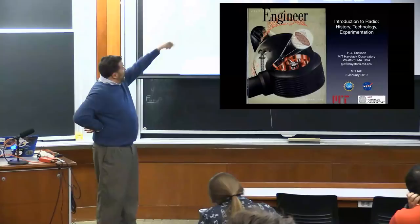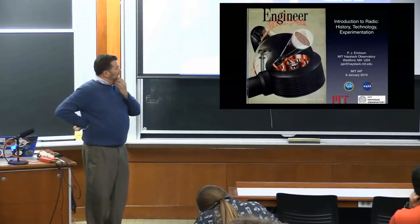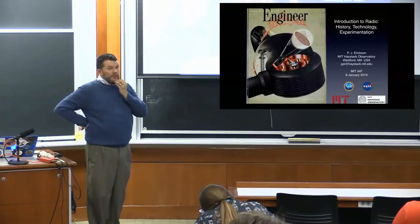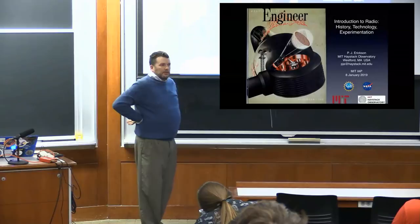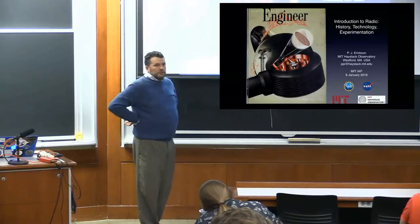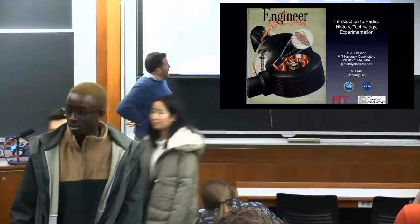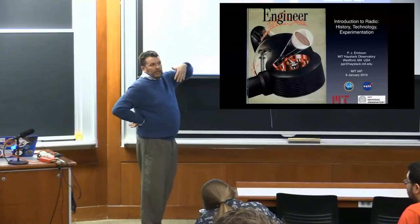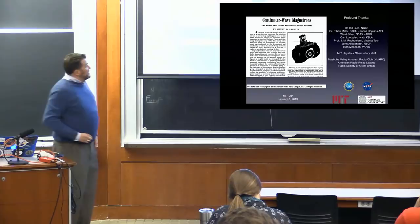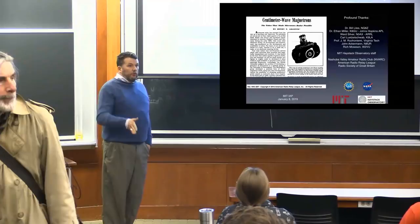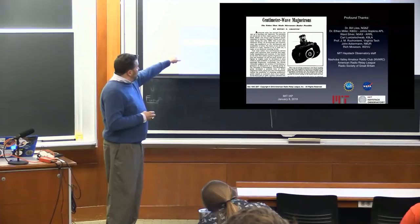Before we get started, this picture right here is a little bit of history of how maybe we got here. That's from an in-house publication at Westinghouse Corporation called the Westinghouse Engineer from November 1946. Does anybody recognize that particular device? That's a cavity magnetron that was instrumental in World War II and all the radar development that occurred not far from here in the radiation laboratory.